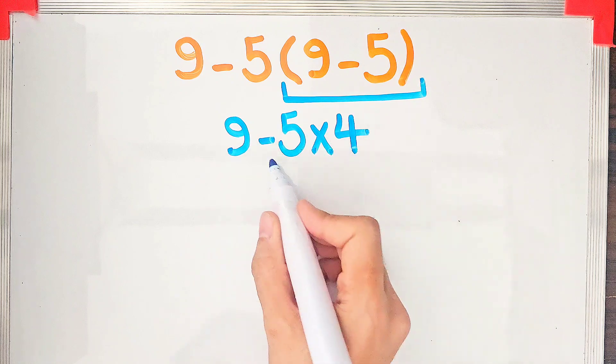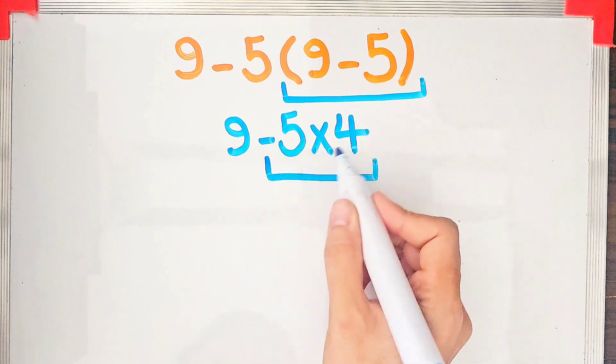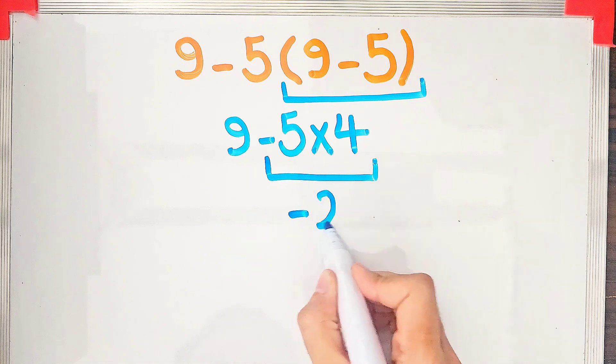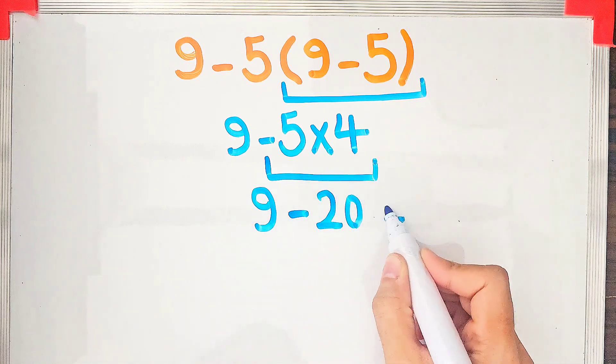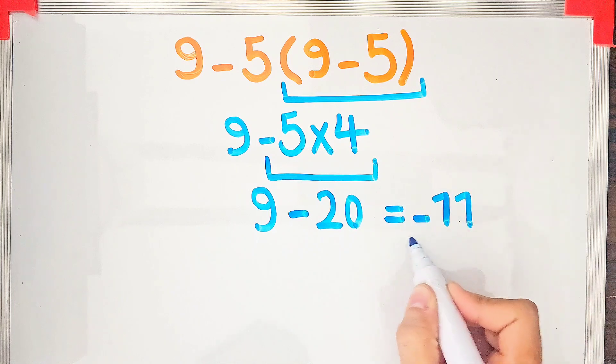So first we do the multiplication. After we do the multiplication, we simplify the question and get the final answer. Thanks guys for watching, goodbye.